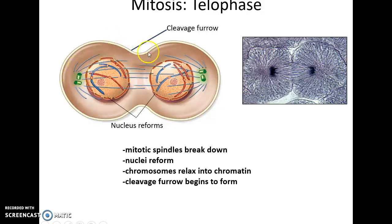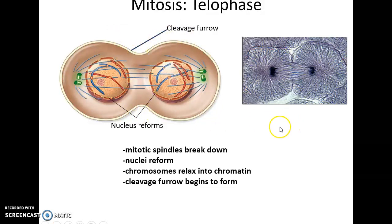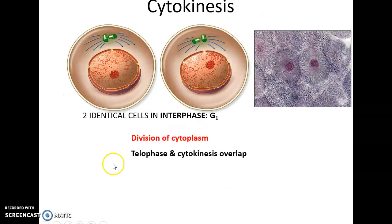The cell continues to divide its cytoplasm via the extending cleavage furrow — cytokinesis — resulting in two brand new cells with identical DNA.